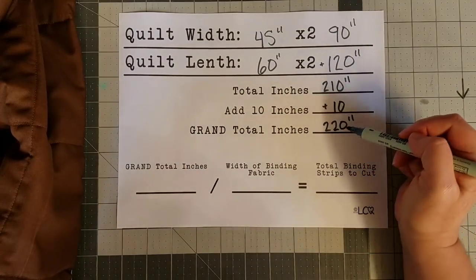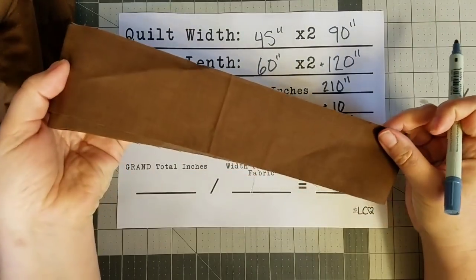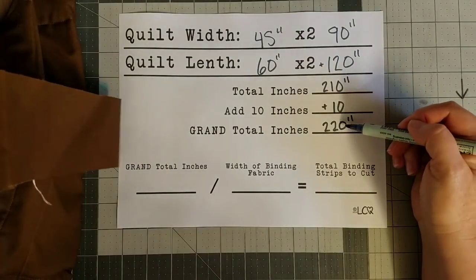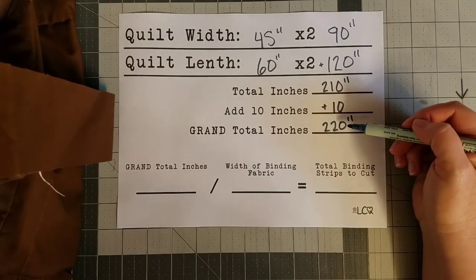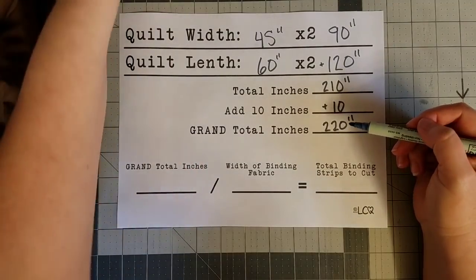Now you could figure out from different pieces of scrap binding like this, you could measure them all out and give yourself 220 inches. Or if you want to figure out how many strips of yardage to cut, then I'm going to show you how to use this portion down here.